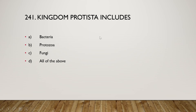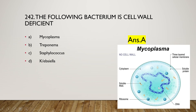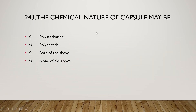Next question: kingdom Protista includes bacteria, protozoa, fungi, or all of the above? The right answer is option D — all of the above. Next question: which of the following bacterium is cell wall-deficient? The options are Mycoplasma, Treponema, Staphylococcus, or Klebsiella. The right answer is option A — Mycoplasma, which has no cell wall.